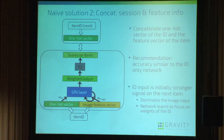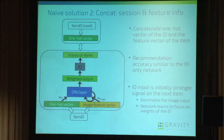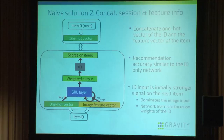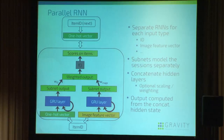The next idea is to use both pieces of information: have the item ID as a one-hot encoded vector and the item feature vector, concatenate those and feed them into a single GRU layer. This is much better than the previous approach, but the accuracy is very similar to that of the ID-only network, because the ID is originally a stronger signal for the next item ID. So the network learns to basically ignore the image features and focus on the ID only, which is also not ideal.